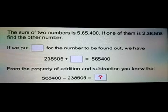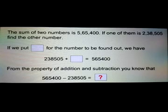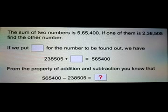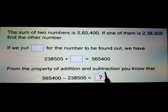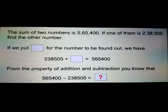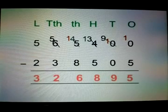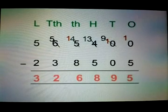Now see another question related to subtraction. The sum of two numbers is 5,65,400. If one of them is 2,38,505, find the other number. If you put a box for the number to be found, we have 2,38,505 plus box equal to 5,65,400. From the property of addition and subtraction, subtract 2,38,505 from 5,65,400 to get the answer 3,26,895.